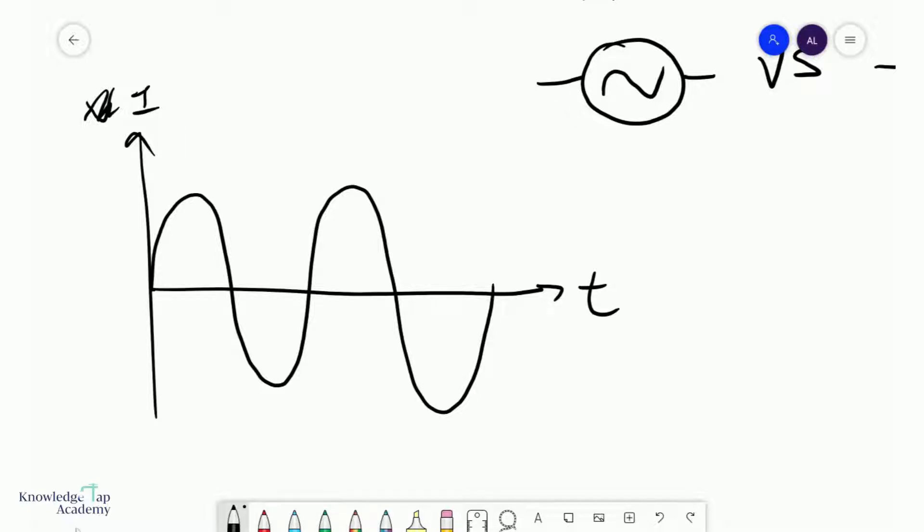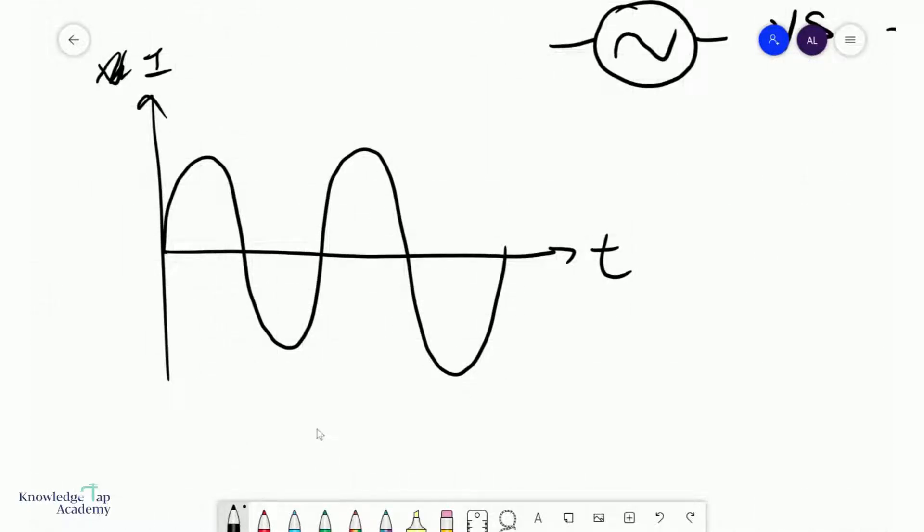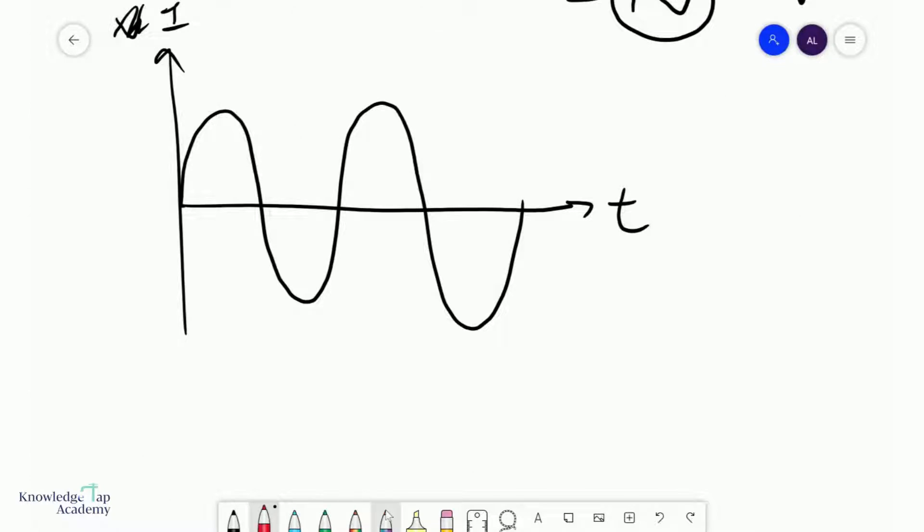One of the key features, and this is very important, of an alternating source is that, number one, it switches polarity. It switches polarity, and so you'll see that sometimes it spends its time being positive, and that other times it spends its time being negative. And this is a very important feature.